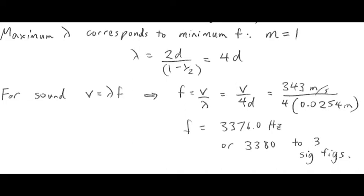Then we use the equation for the speed of sound, or any wave, which is the wavelength times the frequency. Solve that for frequency. Frequency is speed of sound divided by the wavelength, so v over 4d. Plugging in our numbers, we get 343 divided by 4 times 0.0254, so that's 1 inch in meters. And we end up with a frequency of 3376, or 3380 hertz, to three significant figures.